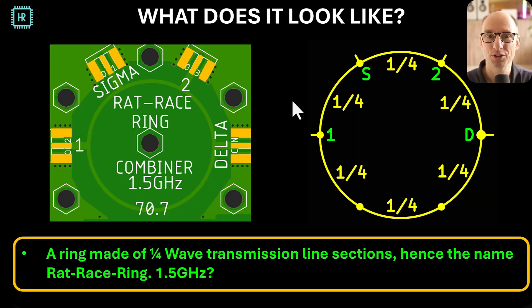So what does a rat race ring hybrid look like? Well, it's called rat race ring because it's actually a ring. You can see the actual PCB design here on the left, so you have a ring with four ports where connectors can be connected. On the right side you see a more schematic way how this thing is put together, and you can see that it's made up out of six quarter wave transformers, so that also gives you a little bit of a clue about how this works.